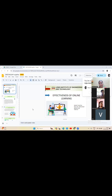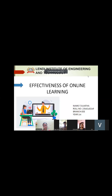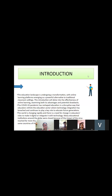Good afternoon, one and all. This is Sijata from Triple P. Today my topic is about the effectiveness of online learning. Online learning refers to a mode of education where instruction and content are delivered through the internet. Online education is increasingly popular due to its convenience and flexibility. There are two types: synchronous online learning — real-time interaction between instructors and students through video conferencing — and asynchronous online learning — where students access pre-recorded lectures and materials at their own convenience.